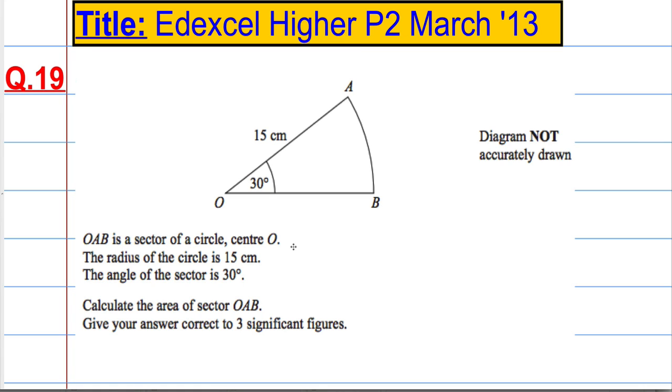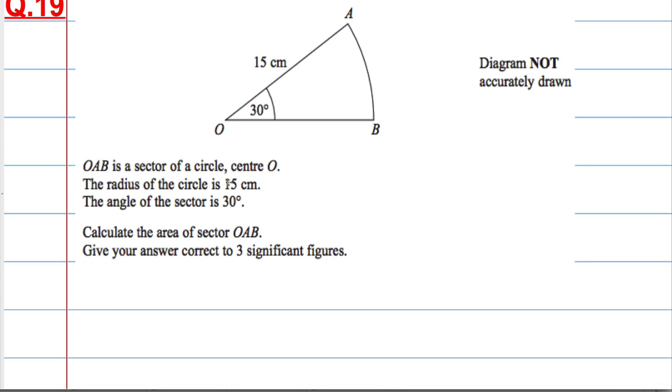Question 19. OAB is a sector of a circle, center O. The radius is 15 cm and the angle of the sector is 30 degrees. Calculate the area of sector OAB. Give your answer correct to three significant figures.